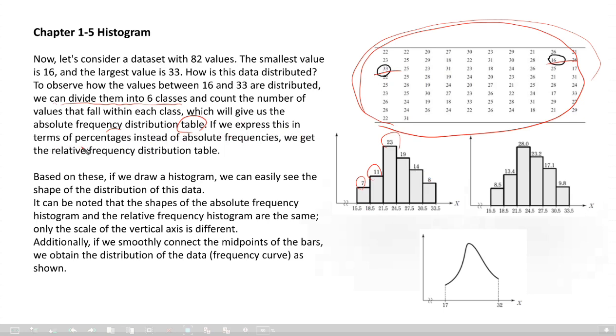If we use percentage instead of absolute frequencies, we get a relative frequency distribution table. So from that table, we get relative frequency here. Same histogram. Why this number, 8.5, 28, here is 28, here 23, here 7? I just changed the scale of the vertical axis. Do you understand that? Then the shapes are equivalent.